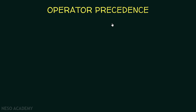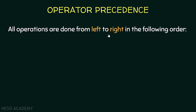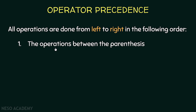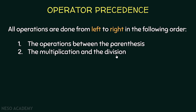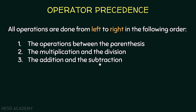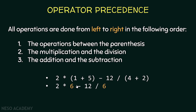Now let's talk about operator precedence. This specifies what to do first, just like mathematics in school. All operations are done from left to right in the following order: first, operations between parentheses; then multiplication and division; and finally addition and subtraction. For example, to calculate an expression, we first calculate 1 plus 5 and 4 plus 2 inside parentheses, giving us 6 and 6. Then we do the multiplication and division: 2 multiplied by 6 gives 12, and 12 divided by 6 gives 2. So we get 12 minus 2, and finally the answer is 10 — just like mathematics in school.